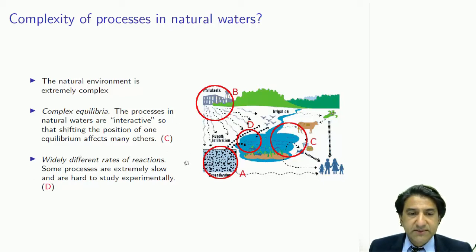And to finally complicate matters, there's a widely different range of reaction rates taking place. Some processes are really slow, taking millions of years, and some processes, like photochemical reactions, take place in a femtosecond.